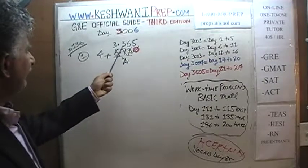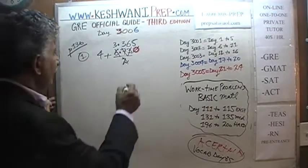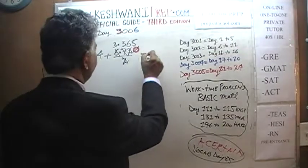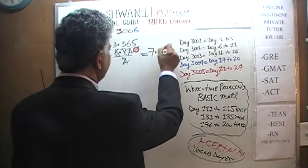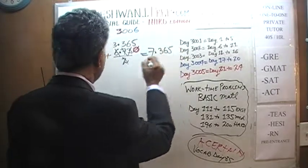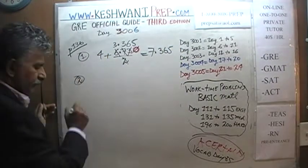4 plus 3.365 is simply 7.365. Let's do the next one, number 2.